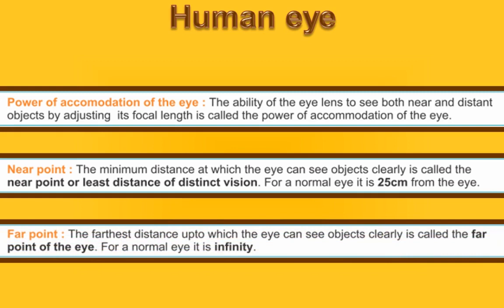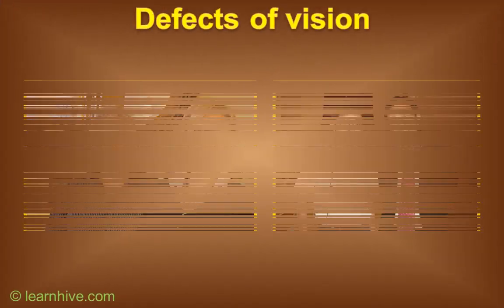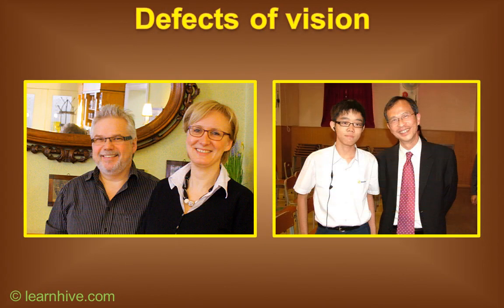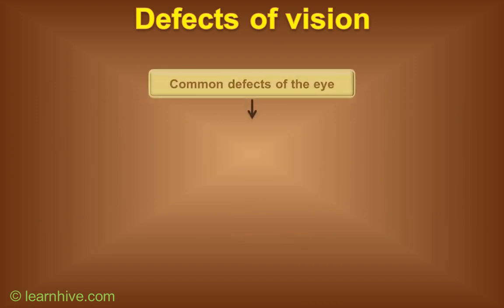Far point: the farthest distance up to which the eye can see objects clearly is called the far point of the eye. For a normal eye, it is infinity. Defects of vision: some people have problems in seeing nearby objects, and some cannot see far-off objects, so they wear spectacles. This is due to the fact that they might be suffering from defects of the eye.